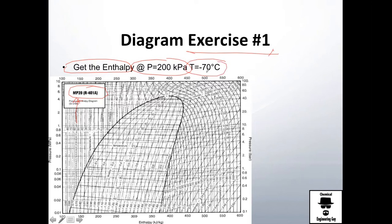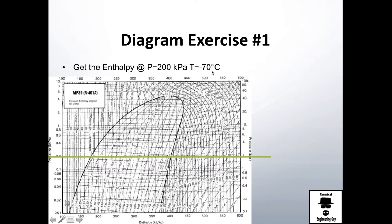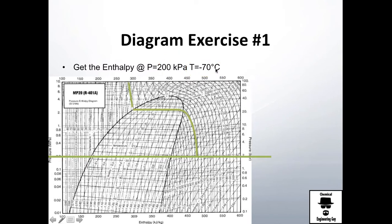A pretty common question is: get the enthalpy at 200 kilopascals and minus 70 Celsius. How do we do that? First thing first, find 200 kilopascals — if you convert to megapascals you get 0.2 MPa.